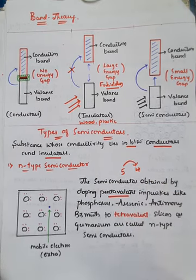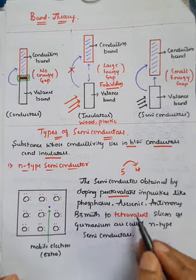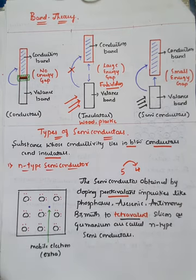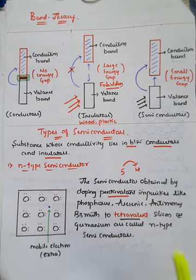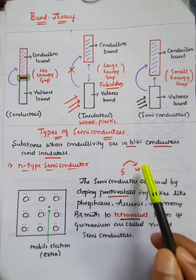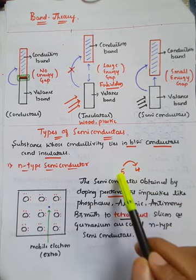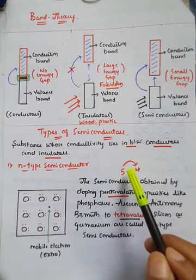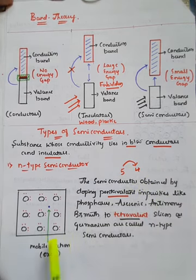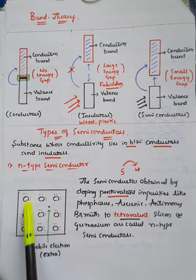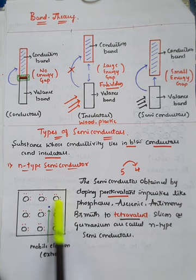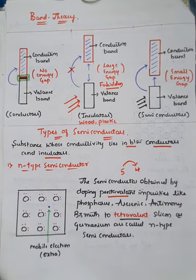Whenever pentavalent is added to tetravalent — silicon or germanium — it is considered an n-type semiconductor. When the pentavalent element is added to tetravalent, there will be one extra electron, because the element has five electrons in the outermost orbit (pentavalent = five valences) whereas the base is tetravalent (four electrons). Therefore there will be one extra electron. In the crystal system, all atoms are tetravalent (silicon or germanium), and when you add the pentavalent impurities, one extra electron appears at the interstitial site — this is called a mobile electron.